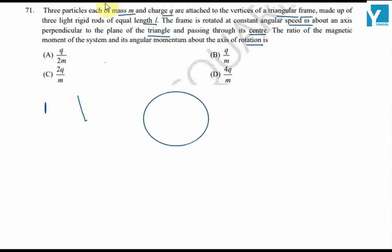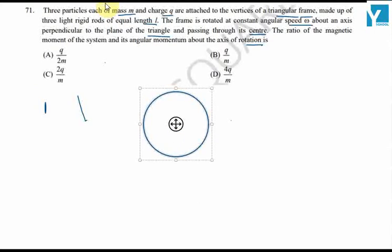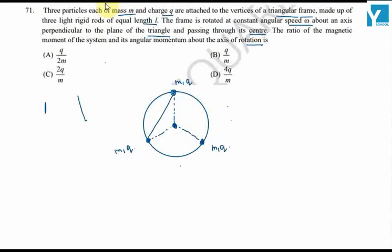Suppose we are having three charge particles placed at the vertices of the frame. One particle here with mass m and charge q, one particle here with mass m and charge q, and further the third particle. These are sitting on this triangular frame.